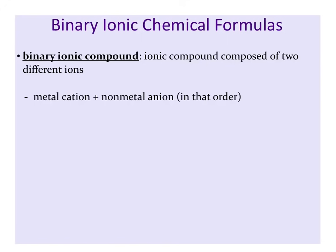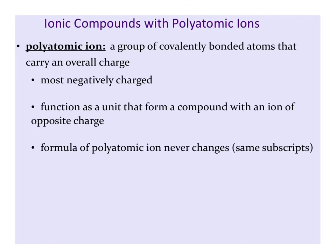We have already discussed how to write names and chemical formulas for binary ionic compounds. These are ionic compounds that contain two elements, a metal and a nonmetal. But ionic compounds can also contain polyatomic ions. The prefix poly means many, so this is an ion that is made of many atoms. These atoms are covalently bonded, but overall they carry a charge.